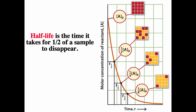One of the really cool things about first-order reactions is that they have a constant half-life that's independent of the initial concentration. No matter what the initial concentration is, after one half-life you'll have half as much; after two half-lives, a quarter; after three half-lives, one-eighth. But again, this is only for first-order processes.